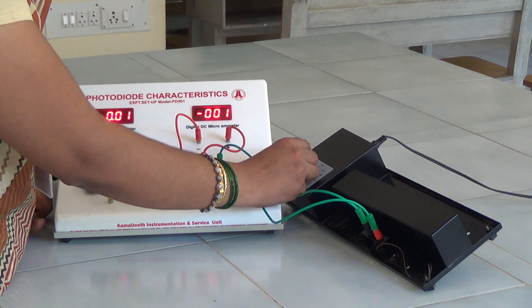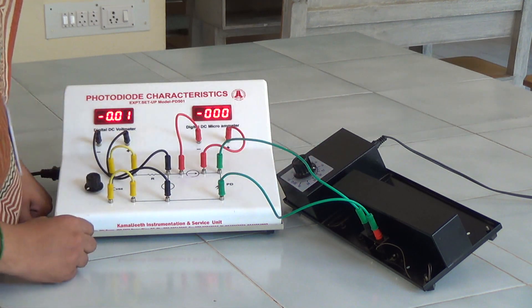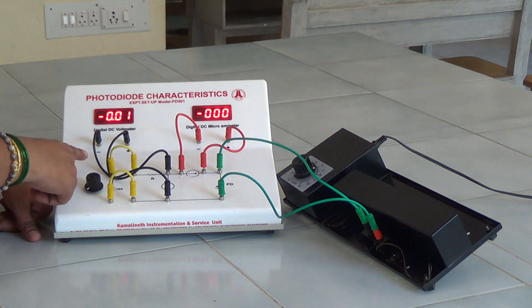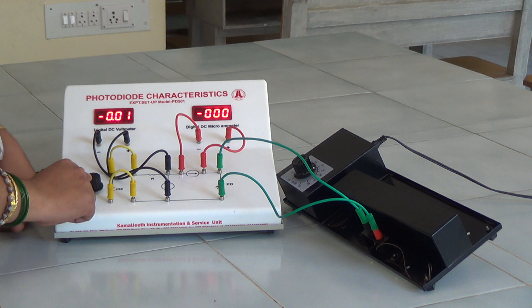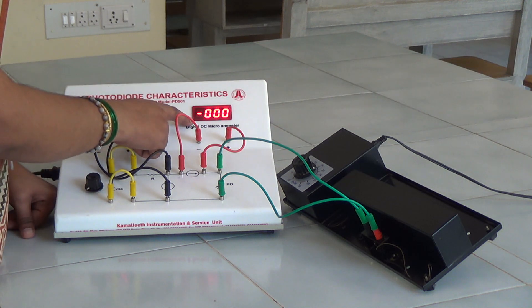That is to 20 milliwatts. And the experiment is repeated again for different values of voltage which is set using this knob. And the corresponding microammeter reading is noted.